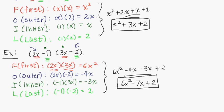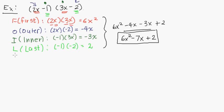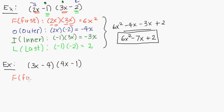So let's do one last example. Let's say we have 3x minus 4 times 4x minus 1. Let's start with the first term. That's 3x and then 4x from the second factor. So 3x times 4x is equal to 3 times 4, which is 12, times x times x, which is x squared.